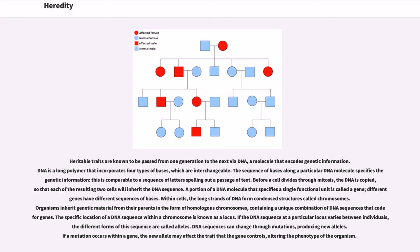This is comparable to a sequence of letters spelling out a passage of text. Before a cell divides through mitosis, the DNA is copied so that each of the resulting two cells will inherit the DNA sequence. A portion of a DNA molecule that specifies a single functional unit is called a gene. Different genes have different sequences of bases.